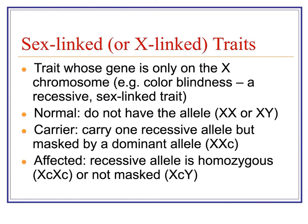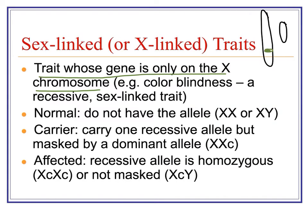When we talk about sex-linked or X-linked traits, these are traits whose gene is only on the X chromosome. The X chromosomes are really long compared to the Y chromosome. So the gene for colorblindness, for example, is on the X chromosome. There is no equivalent of that on the Y chromosome — the X and the Y do not have the same genes. The Y chromosome has genes specific to determining maleness, like the sex-determining gene that gives a developing fetus testes versus ovaries. But the X chromosome carries all these other types of genes, and colorblindness is one of them.